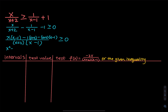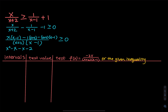Expanding the numerator: we have x squared minus x, and then we have minus x minus 2. And then we have to subtract the product of those two factors, which gives x squared minus x plus 2x minus 2.